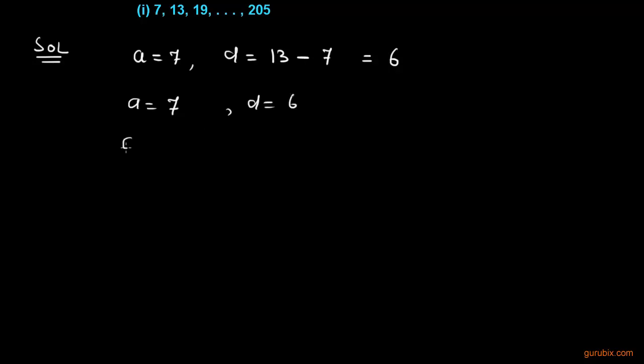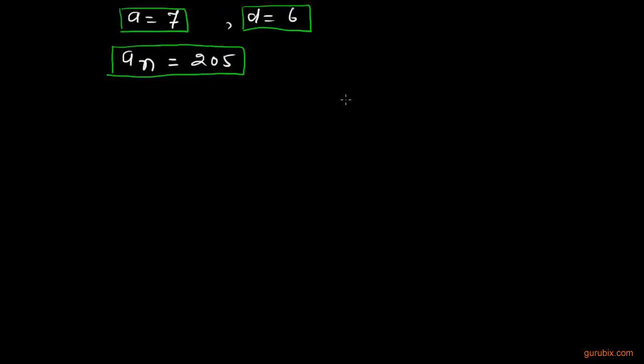The last term, which we denote by AN, is 205. So we have AN, A, and D as well. By using the general term of AP, we can find out the number of terms.